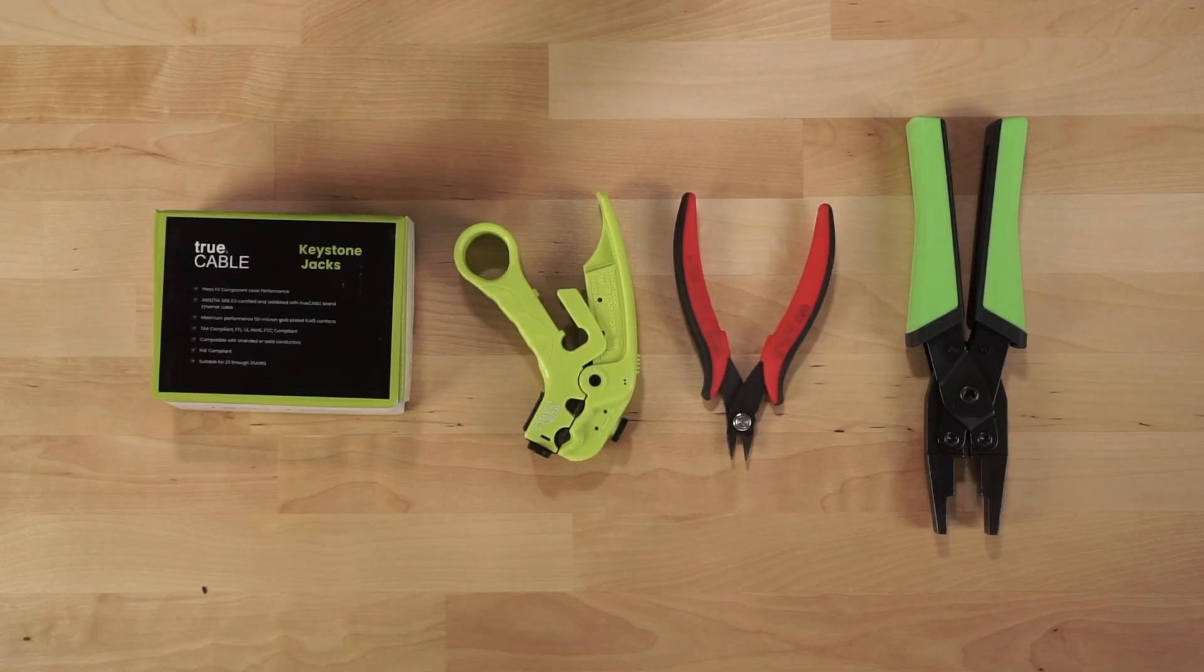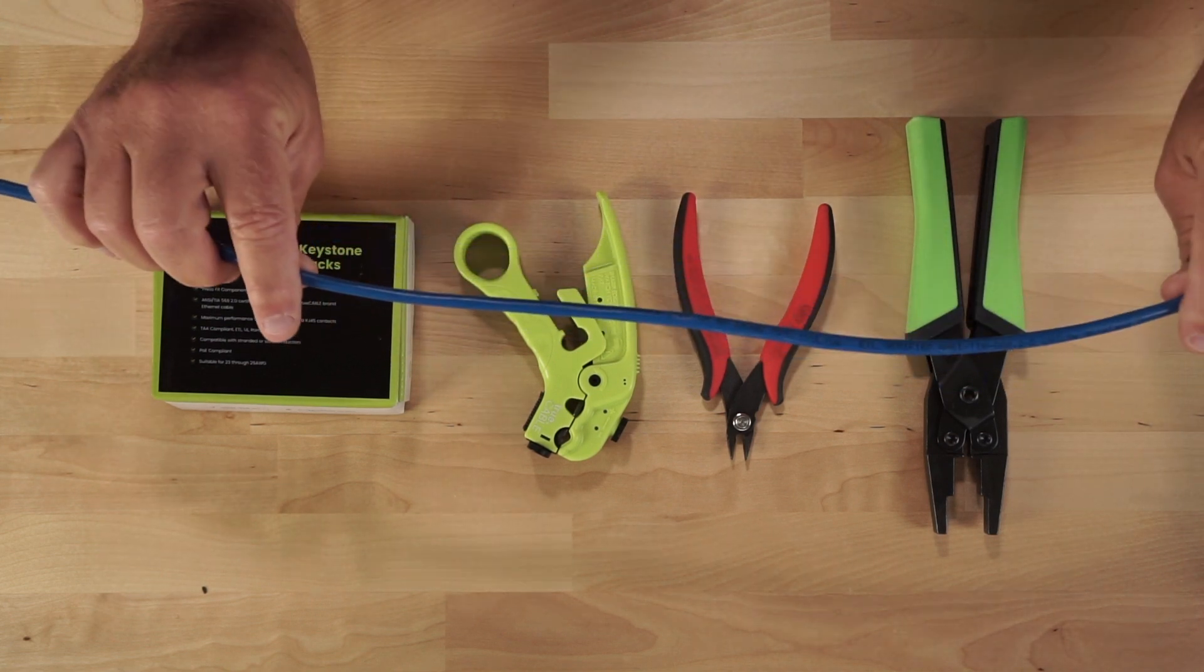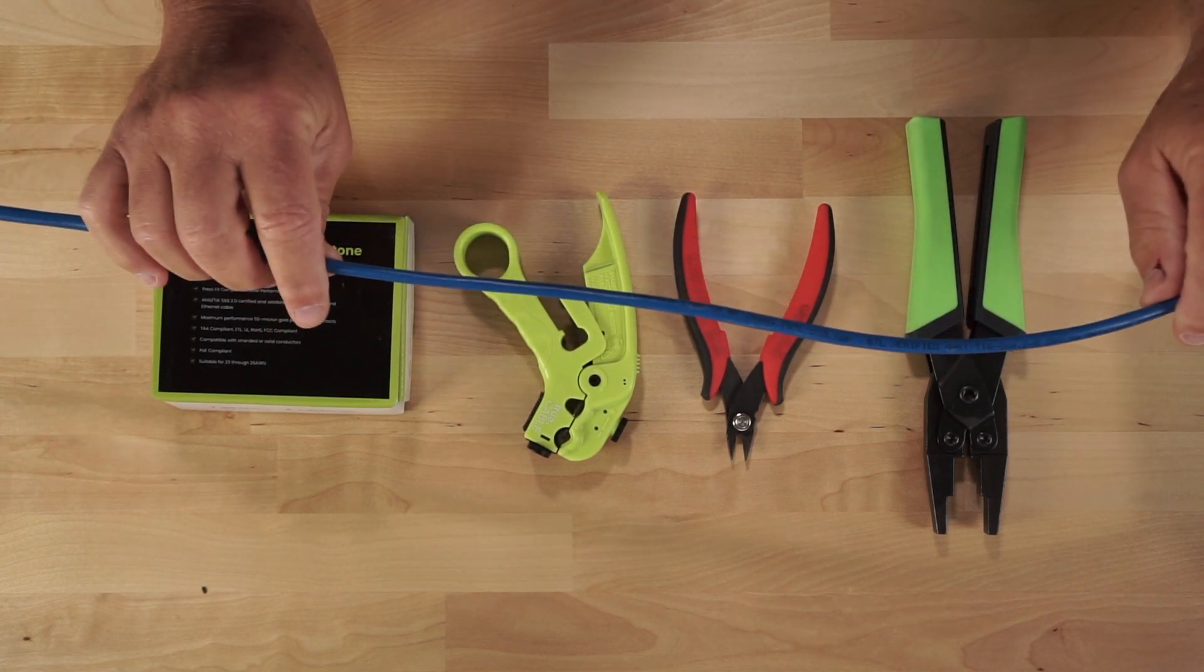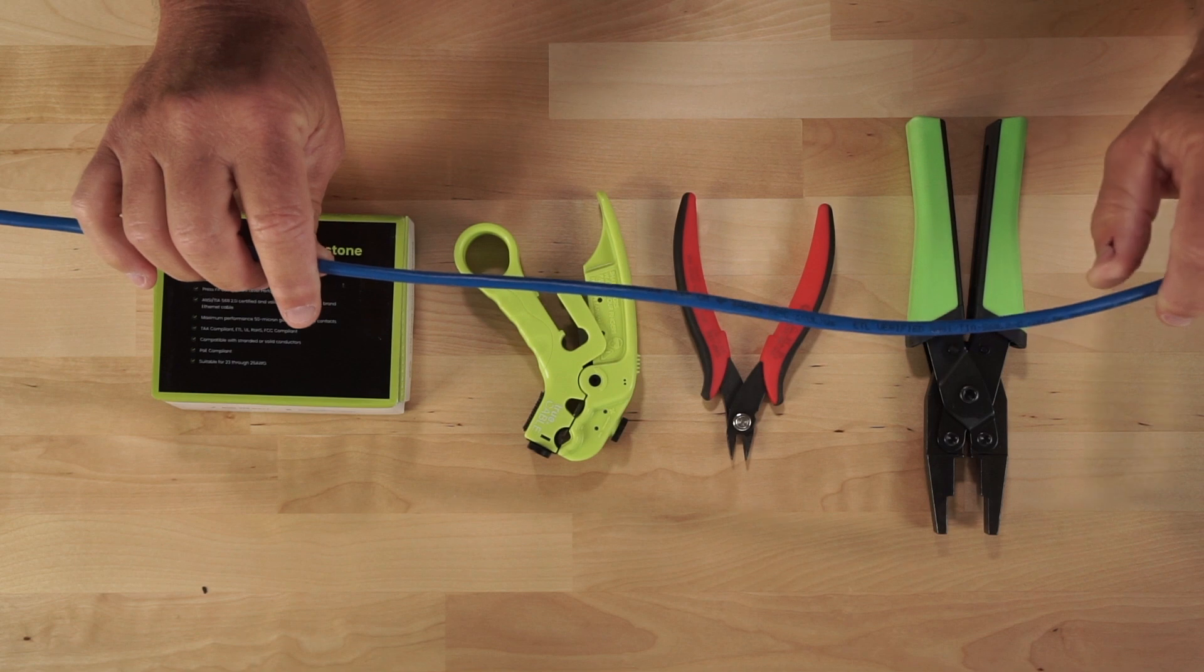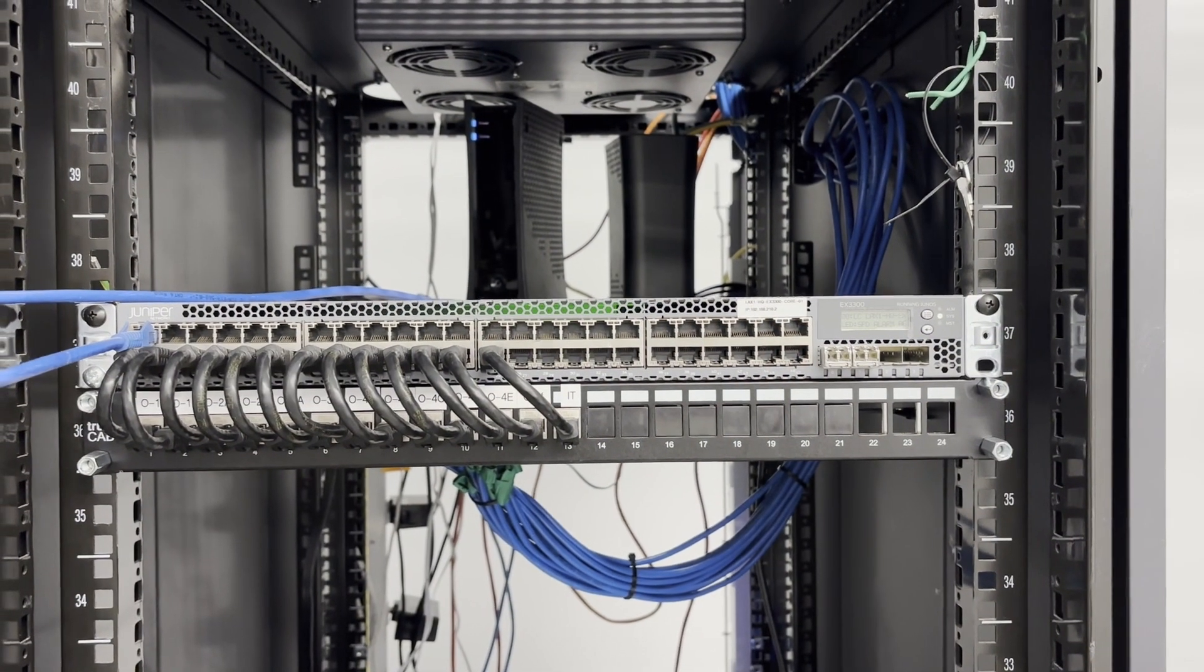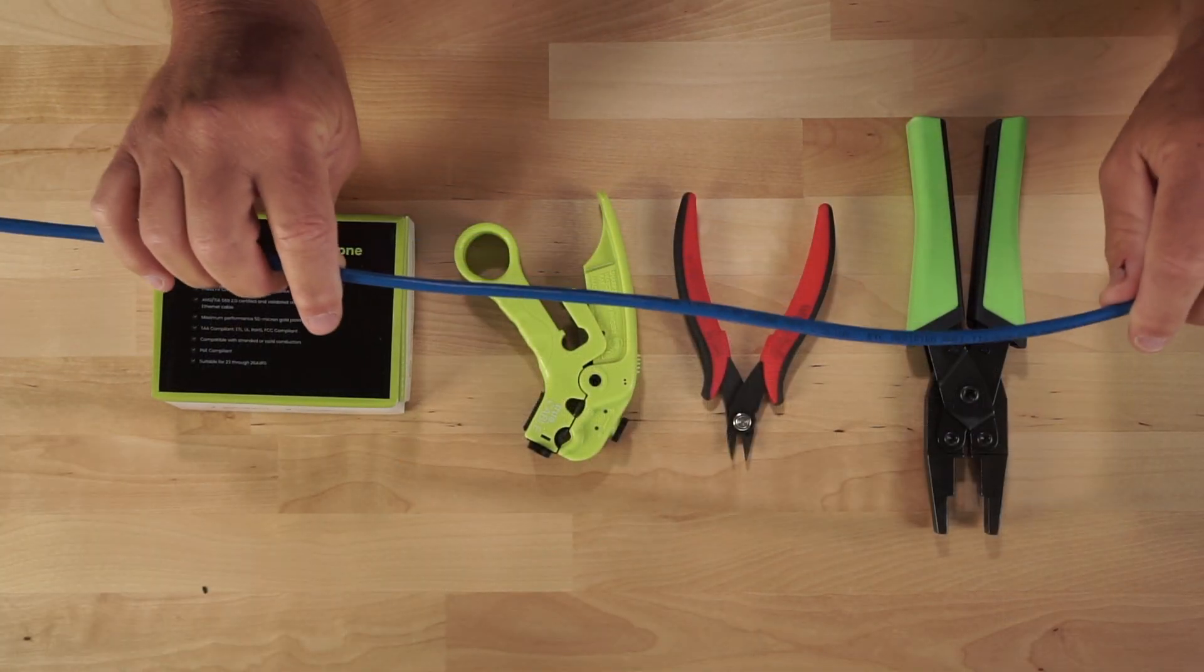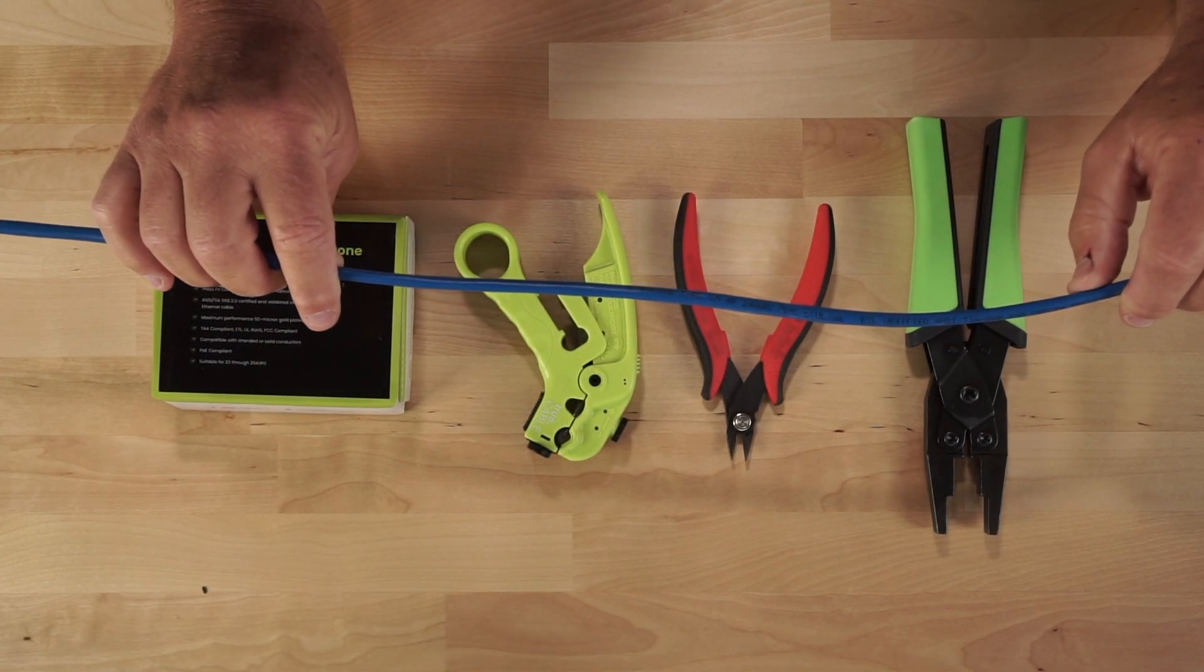Let's get back to the actual termination. All right, so to get started I have a piece of Cat5e shielded cable here. Now if you're wondering why I'm using Cat5e, I just completed a couple of termination jobs where in both cases they use Cat5e shielded.